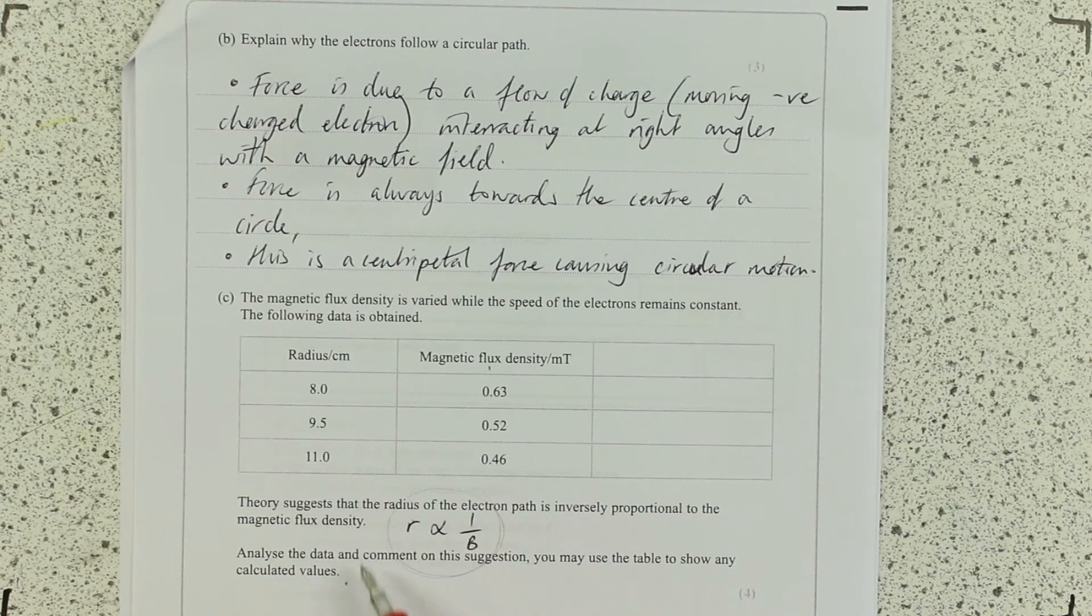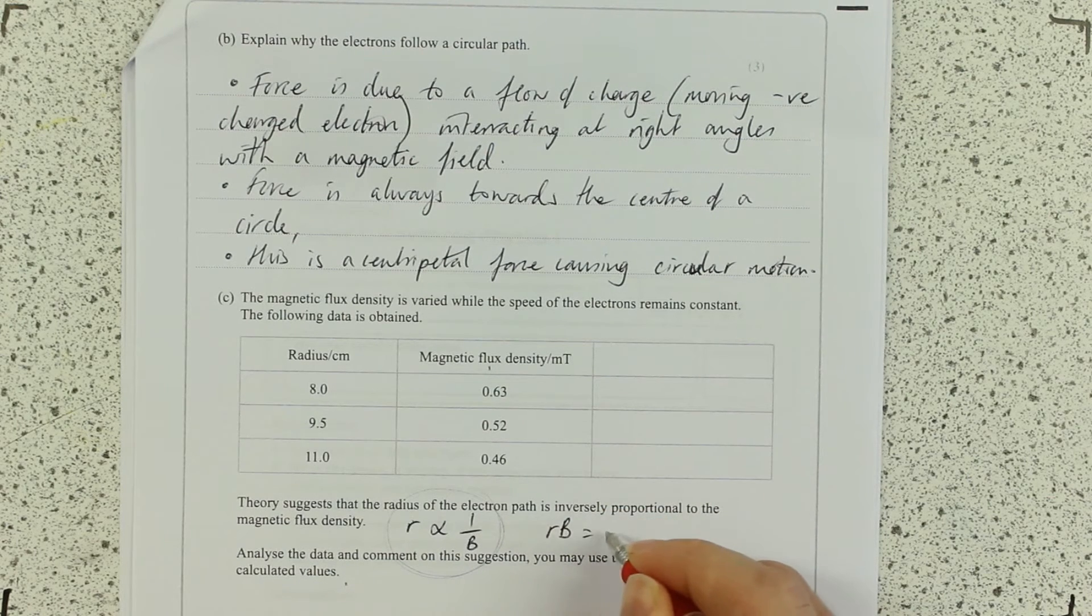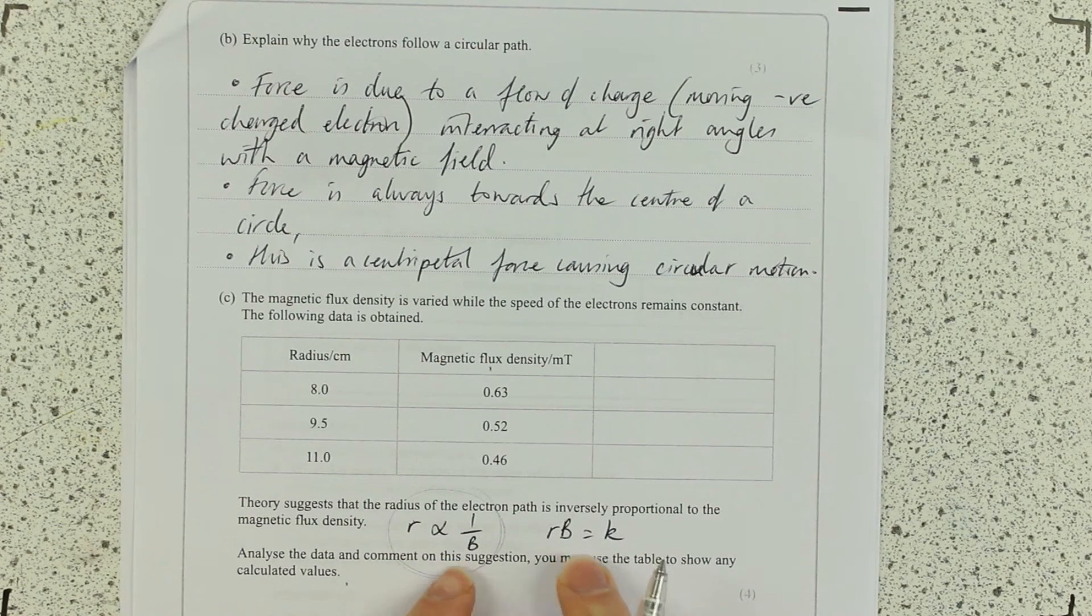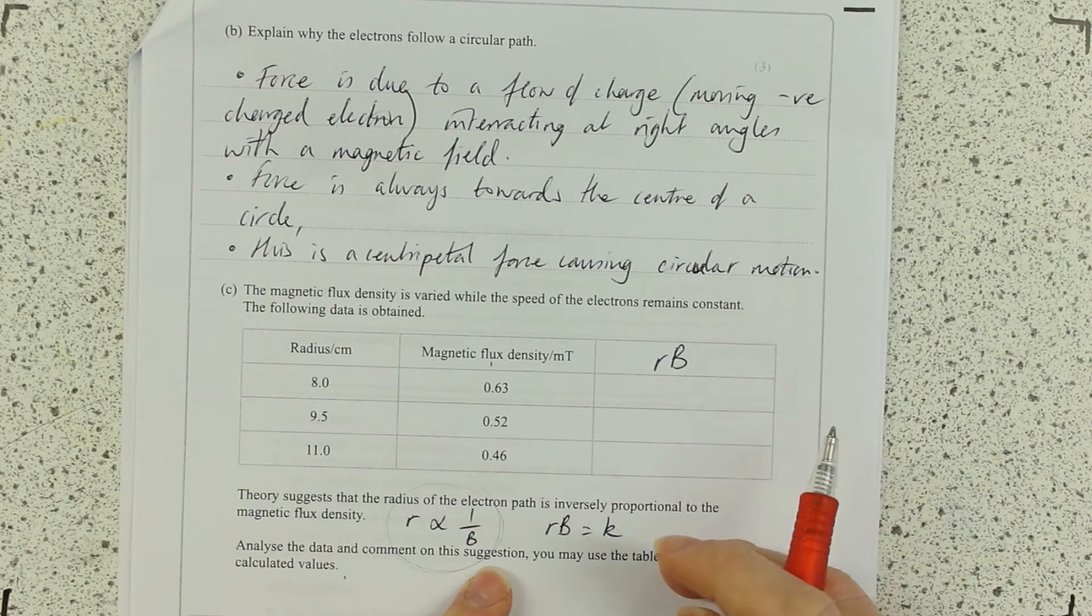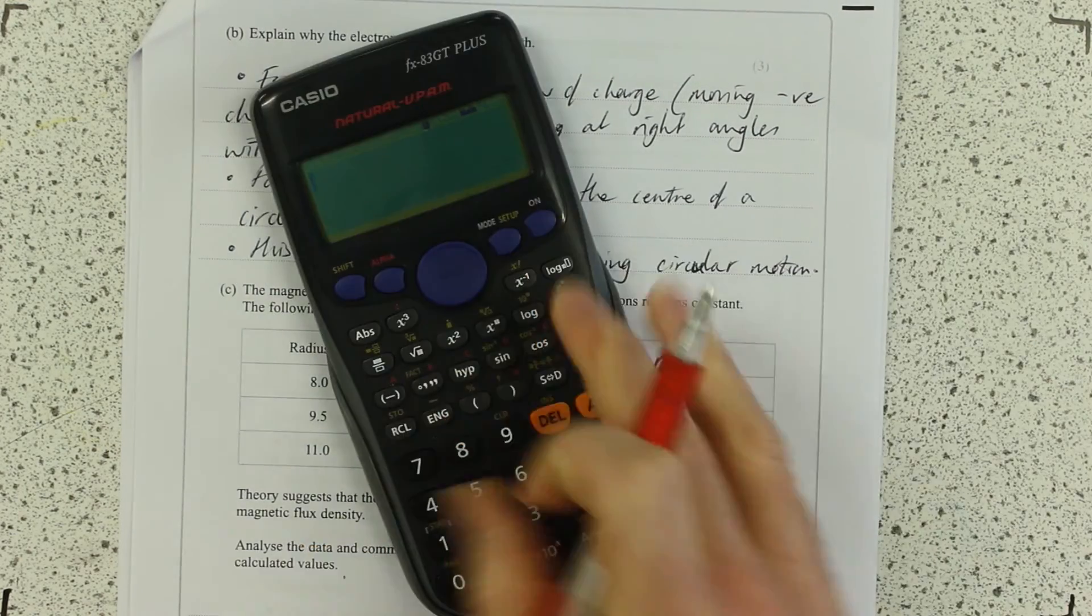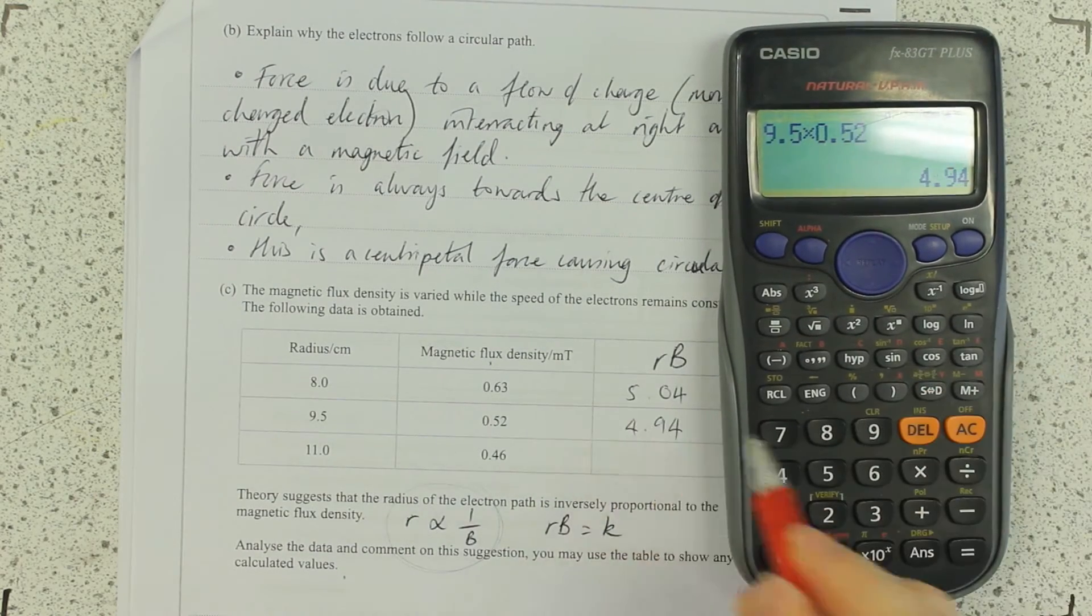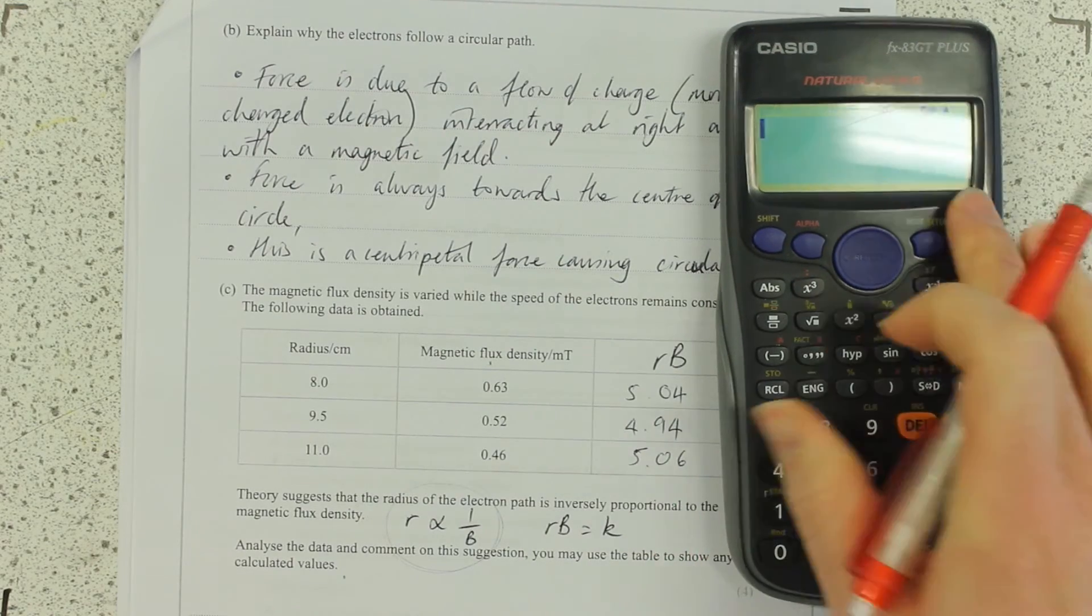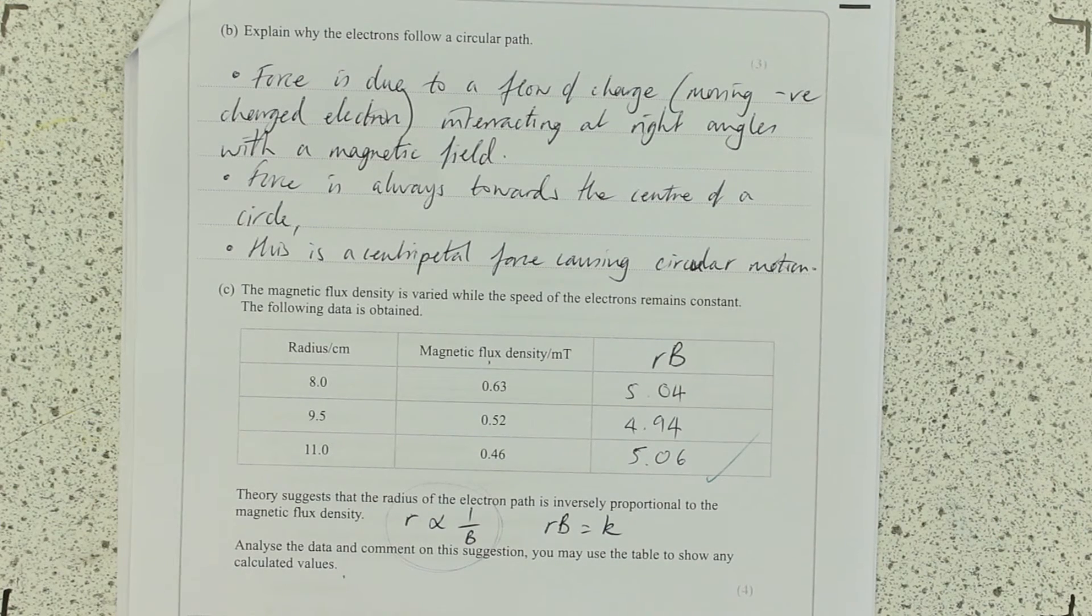Analyse the data and comment on this suggestion. What calculation can we show to do this? Well, if R is proportional to 1 over B, then RB will equal a constant. This is why it's very good to be able to use proportion in different ways. I'm going to calculate RB here. Pretty much, I'm happy with that. They equal a constant. I've got myself a mark for doing some sensible maths there.